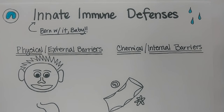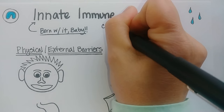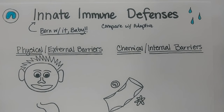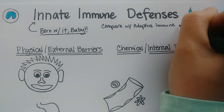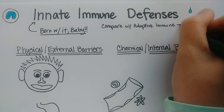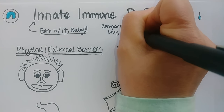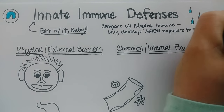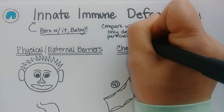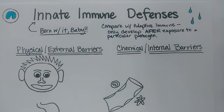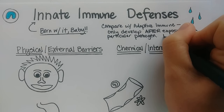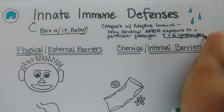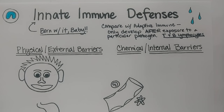The real difference we should consider is comparing innate immunity with adaptive immunity, which we'll be talking about in just a couple pages further in our notes. Adaptive immune defenses take time to develop and only occur after exposure to a particular pathogen. T and B lymphocytes are the driving cells for adaptive immunity, while all other white blood cells are associated with innate immunity, although they might have a role to play in adaptive as well.